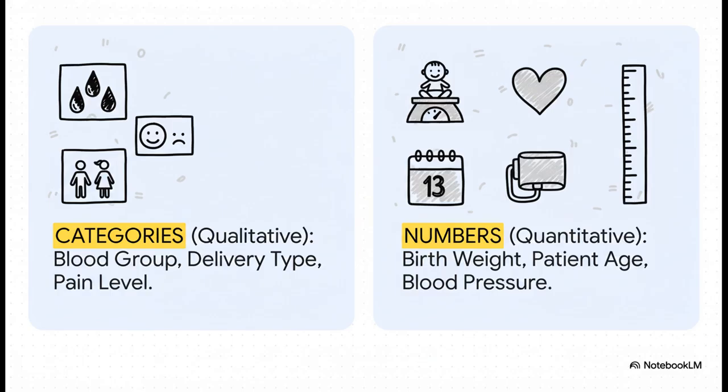So on the left, you've got qualitative data. These are things you sort into groups, like blood types or delivery types. On the right, you've got quantitative data, things you actually measure, like birth weight in kilograms or a patient's age. Getting this right is the first, most important step. It's the master key that unlocks the right way to visualize your data and tell a clear story.